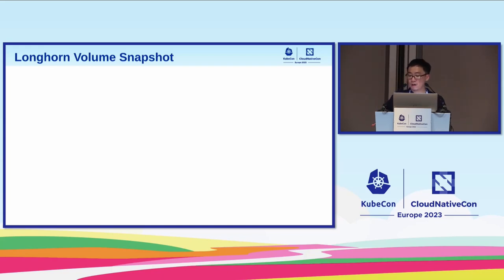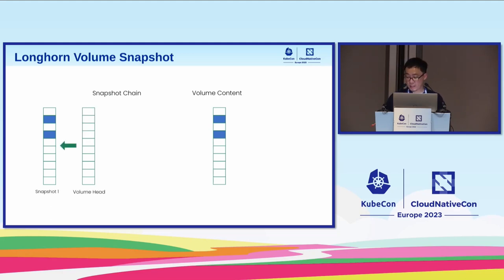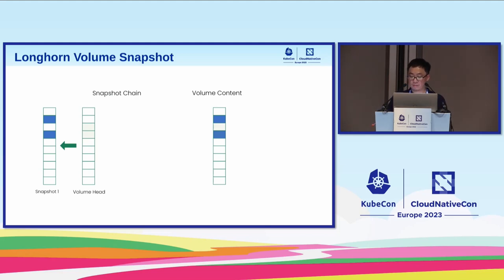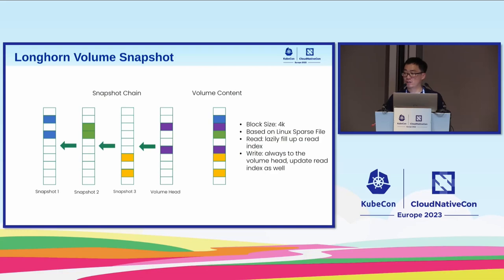For snapshots: each volume has a snapshot chain. Starting with an empty volume, as you write data and take a snapshot, a new volume head is created and the old head becomes snapshot-1. Each subsequent snapshot follows the same pattern. This uses sparse files in a copy-on-write approach, allowing better space efficiency. The new SPDK data engine will have the same snapshot behavior.